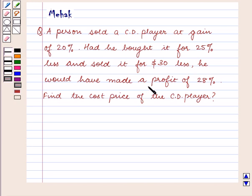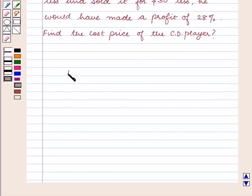he would have made a profit of 28%. Find the cost price of the CD player. We know that profit or gain equals selling price minus cost price. Also, profit equals profit percent times cost price.